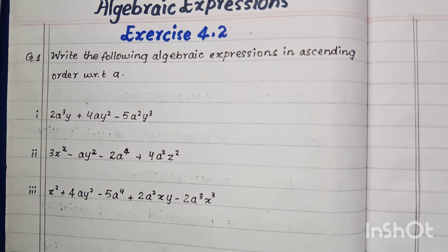Hello friends, welcome to my channel Zip's Corner. Today we will do exercise 4.2. Question number one is: write the following algebraic expressions in ascending order. We have to arrange these expressions in ascending order, looking at the power of variable a. Let's start.